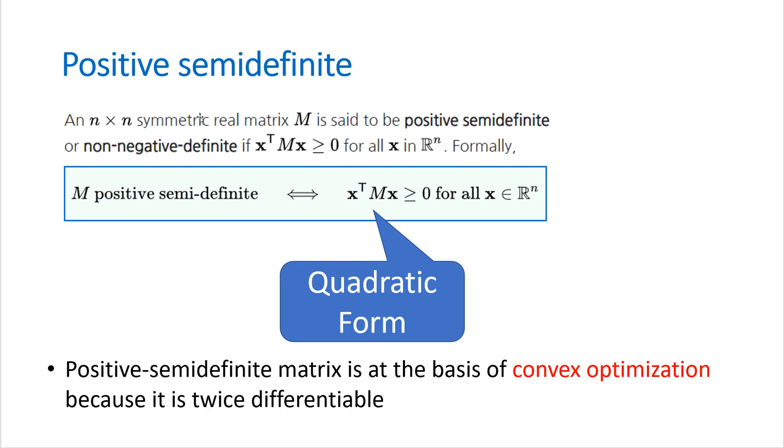One of the important thing, mathematical concept is positive definite. So x transpose times M times x. If this term is greater than zero, then it satisfies positive semidefinite. And look at this form. So we also consider it as quadratic form.